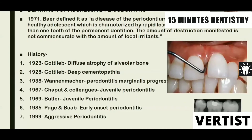Check for pockets in the central incisors and first molars. This is a disease of the periodontium occurring in an otherwise healthy adolescent, characterized by rapid loss of alveolar bone. If you ignore these patients or don't check them properly, within very few months to one year, they will have mobility of these teeth. So whenever you find such cases, try to diagnose and treat them early.